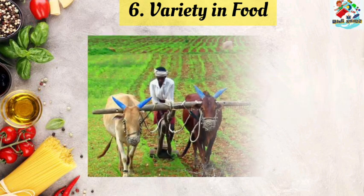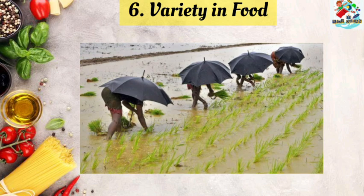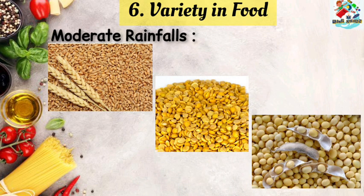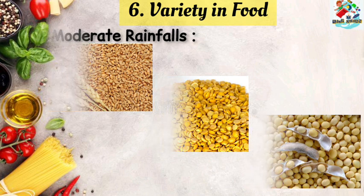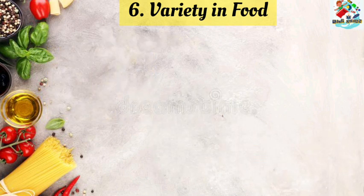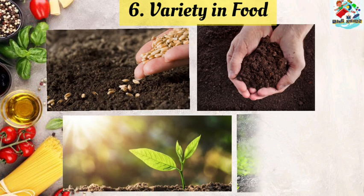Let us learn about agriculture and rainfall. Agriculture is the main occupation in all parts of our country and it is mainly dependent on rainfall. The rainfall received in all regions is not the same. In regions of high rainfall, crops such as rice, coconut, ragi and varai are grown. Wheat and soya beans are grown in regions of moderate rainfall, while drought-resistant crops are grown in regions of low rainfall.